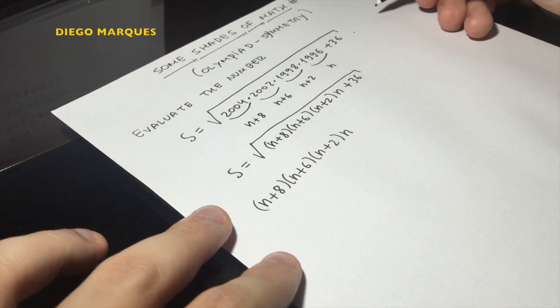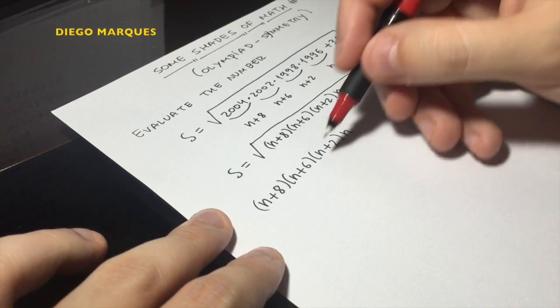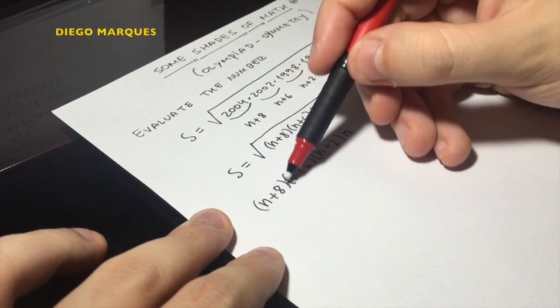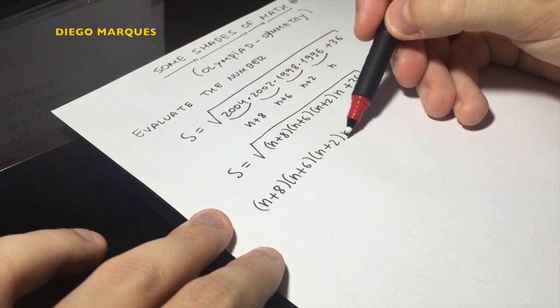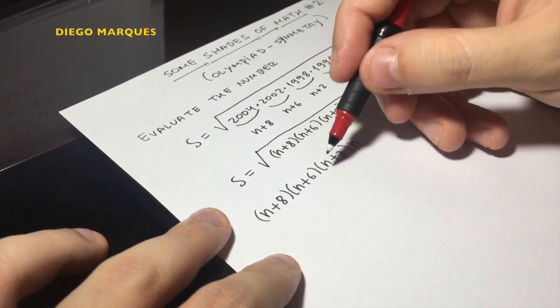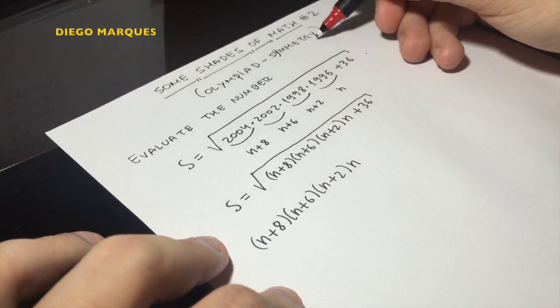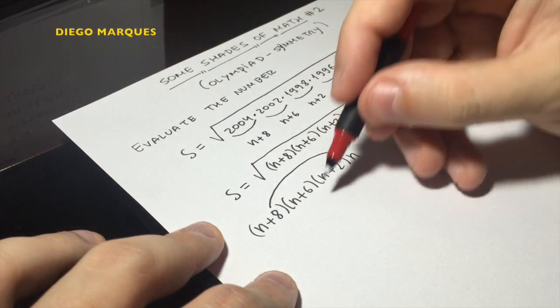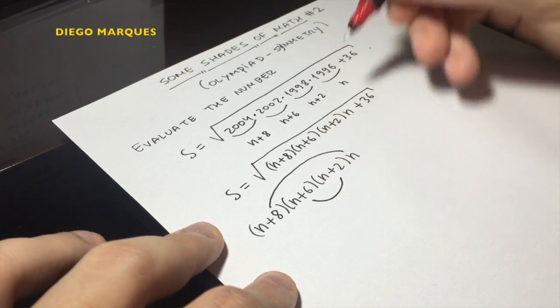The usual way of doing this kind of evaluation is by multiplying the factors from left to the right. So now we'll do something different. We'll multiply symmetrically. So n plus 8 times n, and after n plus 6 times n plus 2.